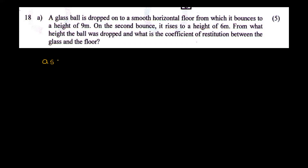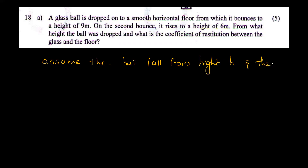Assume the ball is dropped from height h, and then it rebounds to height h1. We have the relation: h1 is equal to e squared times h.